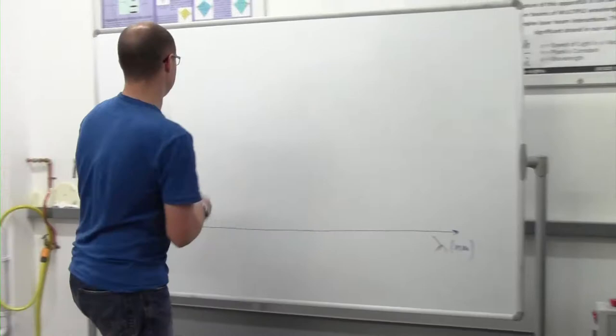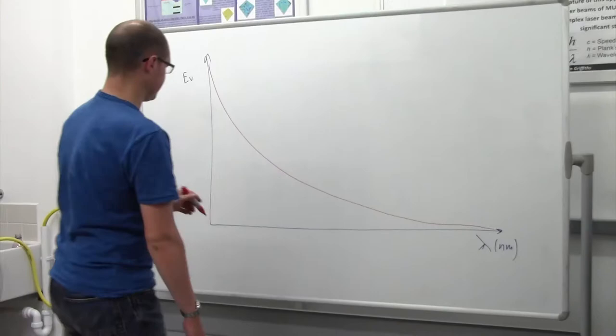Big photons for a short wavelength, longer wavelength, smaller photons. So, okay, if I just draw that in, it looks a bit like that, it goes off to an asymptote into infinity.